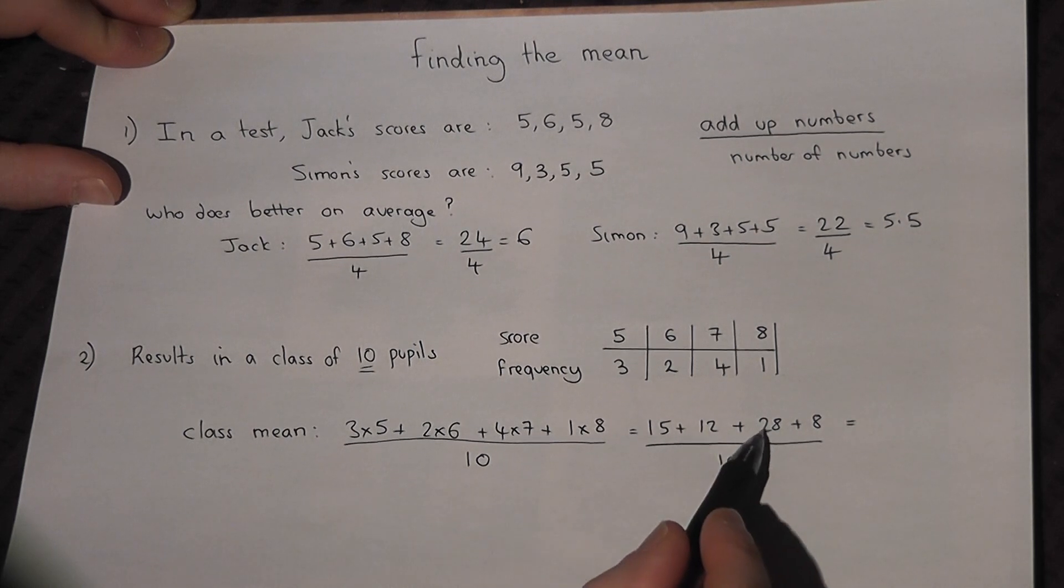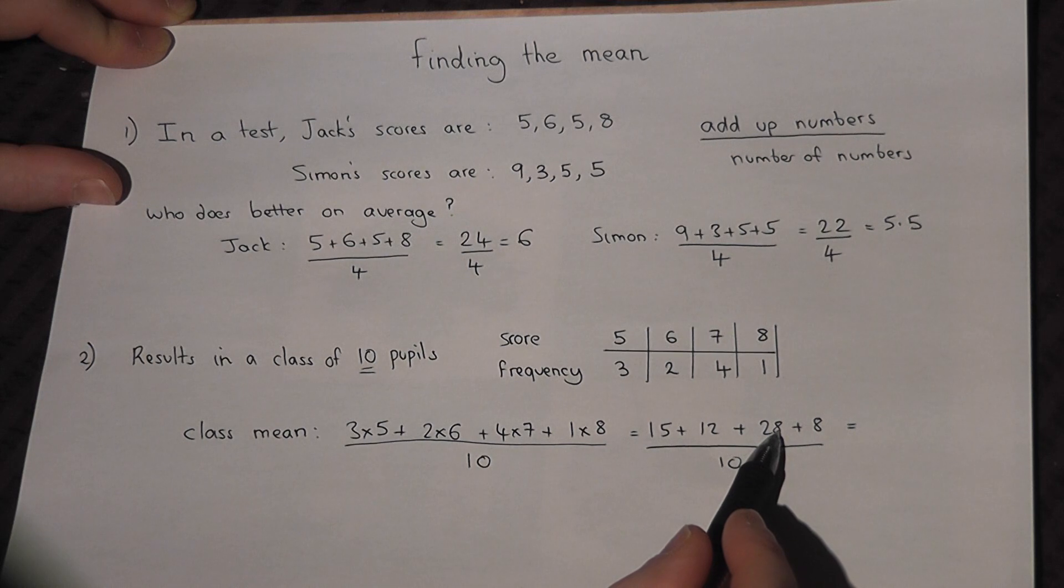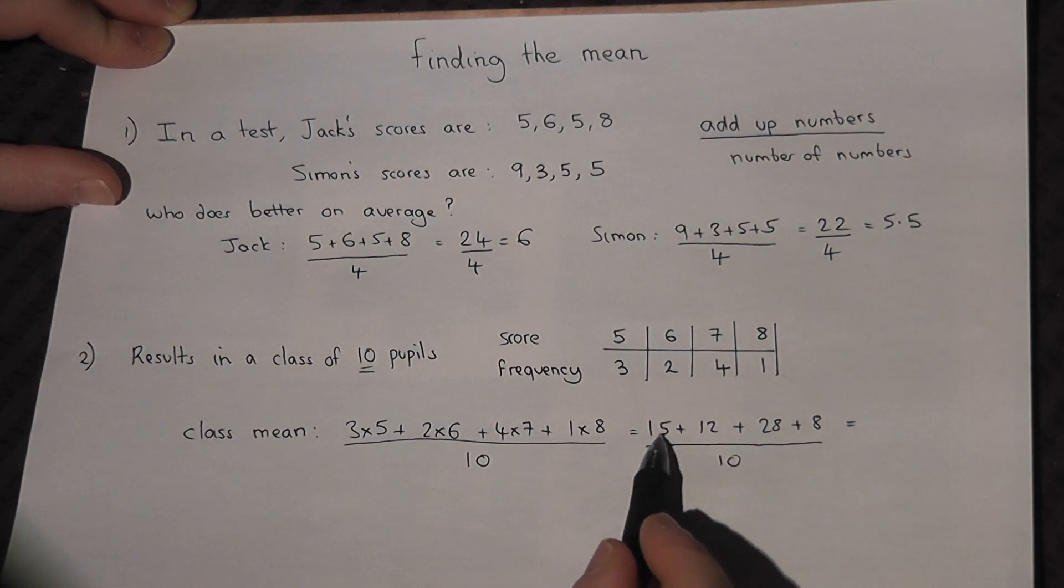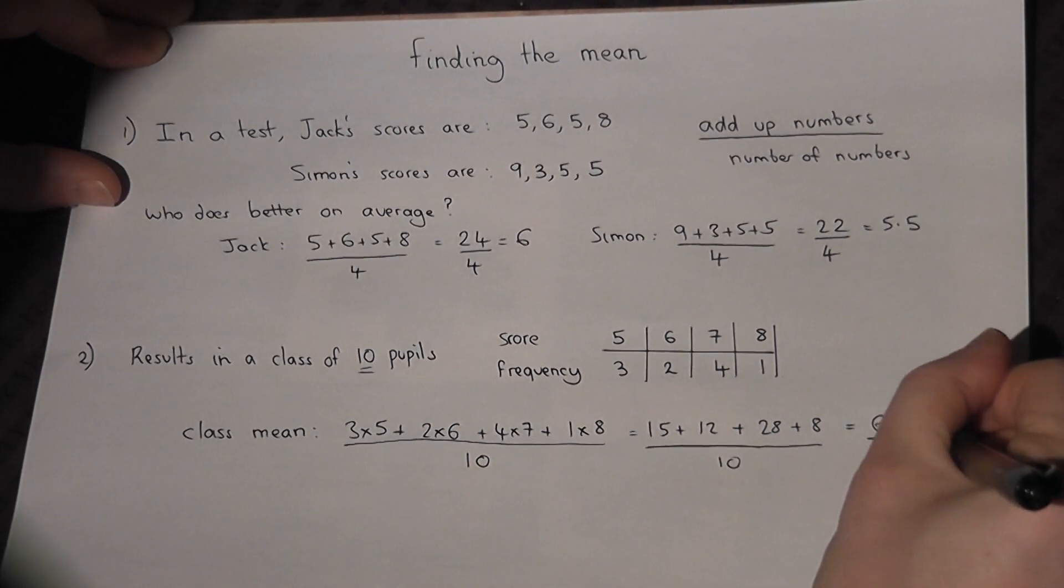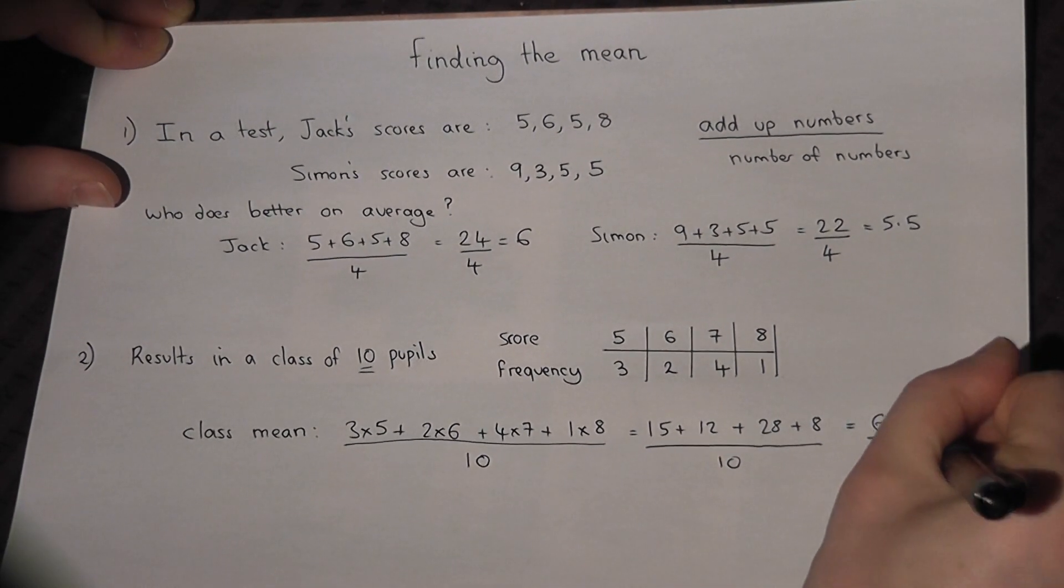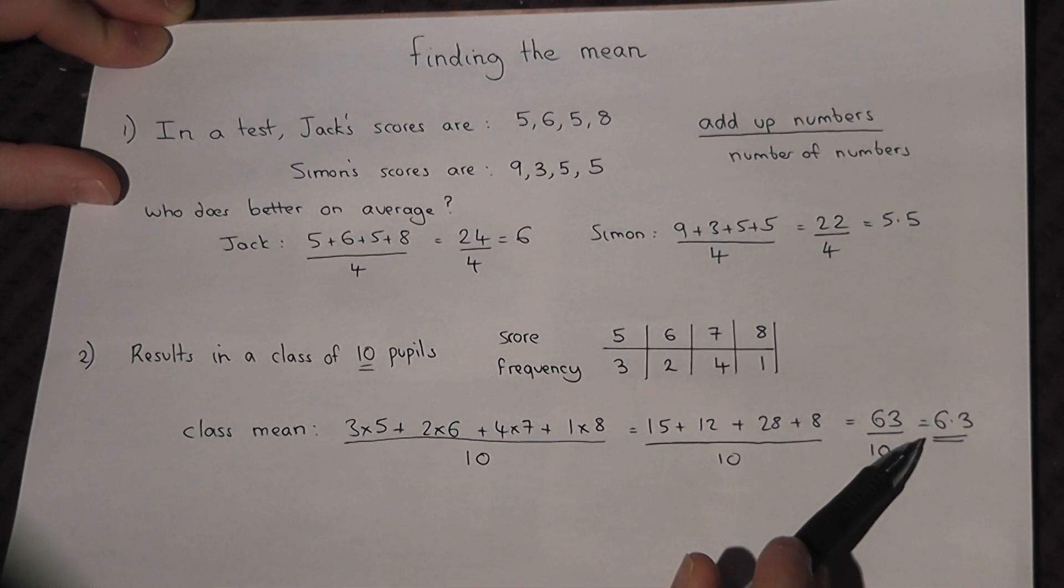10, 20, 30, 40, 48, 56, 58, 63. All divided by 10. And divided by 10, we just get 6.3. So the class average is 6.3.